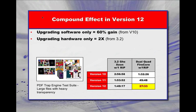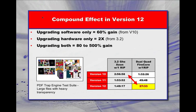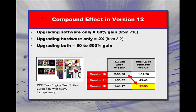Next, let's say you keep your software version the same, but swapped to the new FireCore workstation. This will roughly double your RIP speeds. The most interesting number is the compound effect of running version 12 on the FireCore workstation. For example, as shown here, there's a jump of more than 500% as compared to running version 10 on dual 3.2 Xeons.